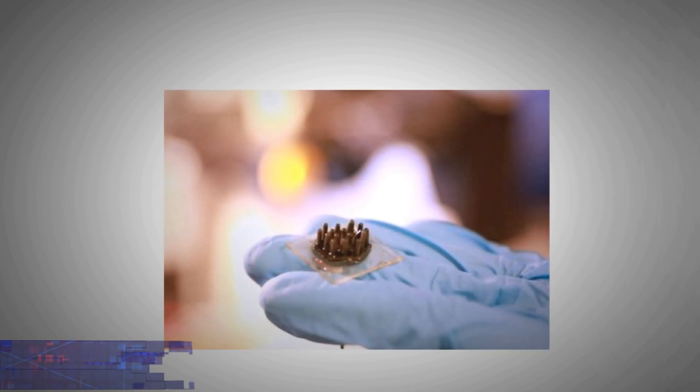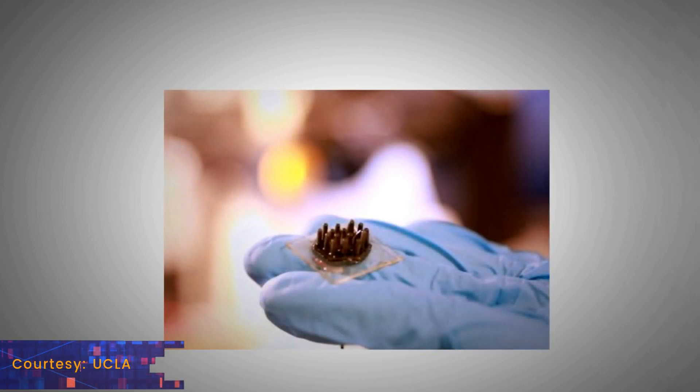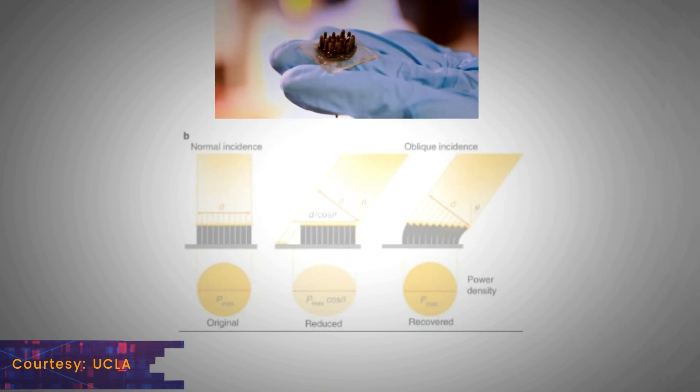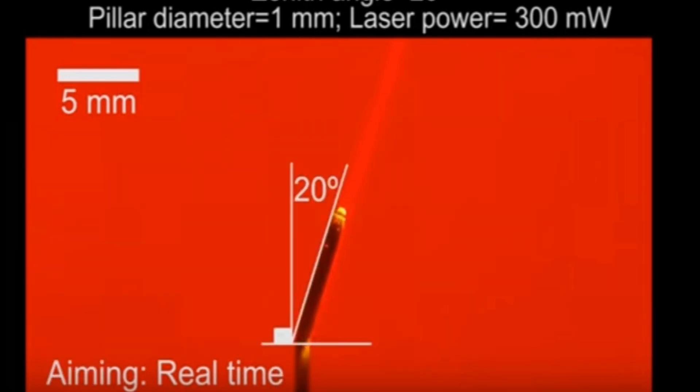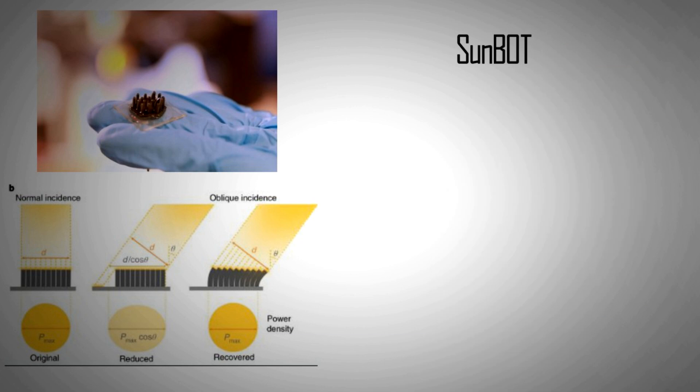Coming back to the latest development, there is now a nanostructured polymer that can respond to light. More specifically it can align itself with the incident light direction in three dimensions over a broad range of temperature. The material is termed SunBOT, which is the short form of Sunflower-like Biomimetic Omnidirectional Tracker.